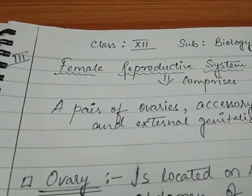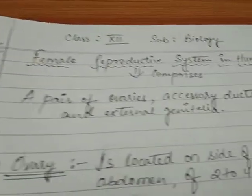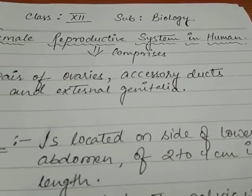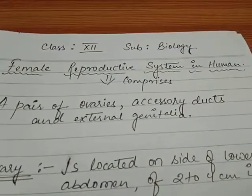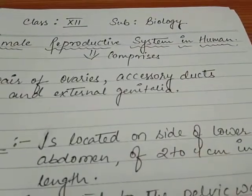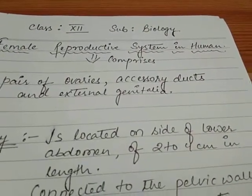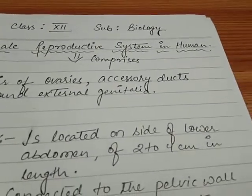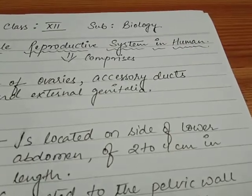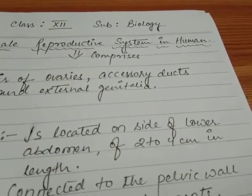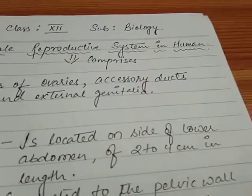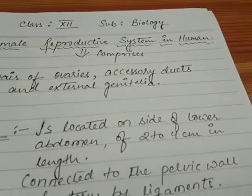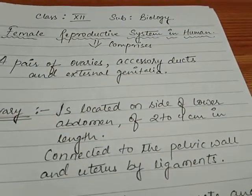The first part is the ovary. Ovary is located on the side of the lower abdomen and is 2-4 cm in length. A pair of ovaries are found in the female system — one ovary on each side of the lower abdomen. Each ovary is 2-4 cm in length and connected to the pelvic wall and uterus by ligaments.